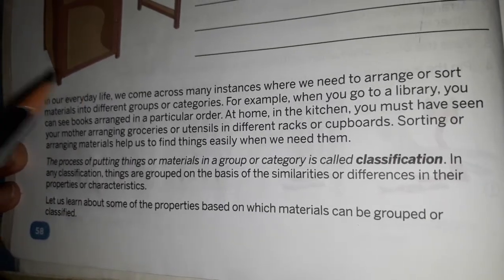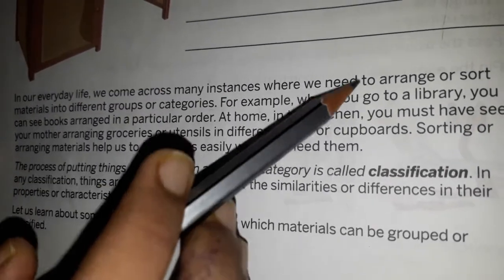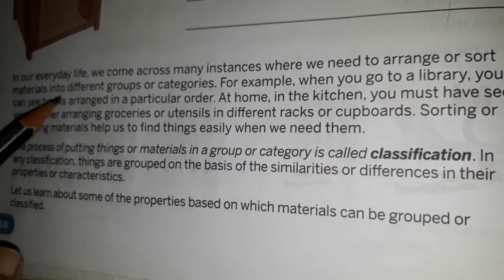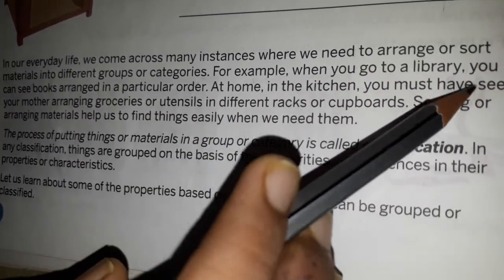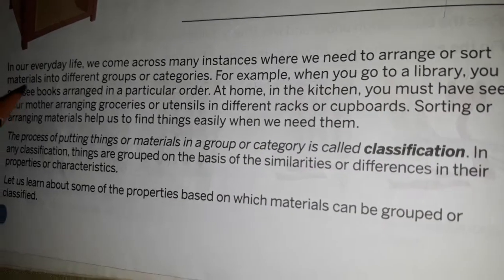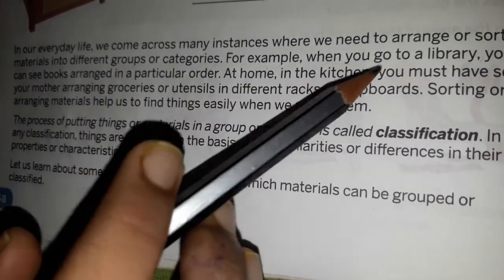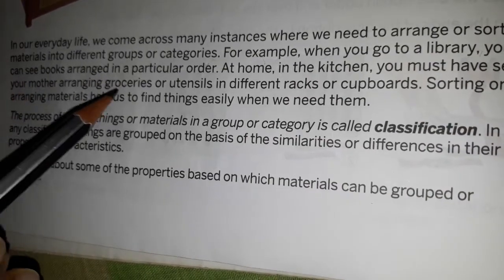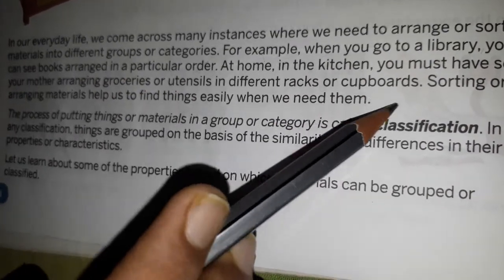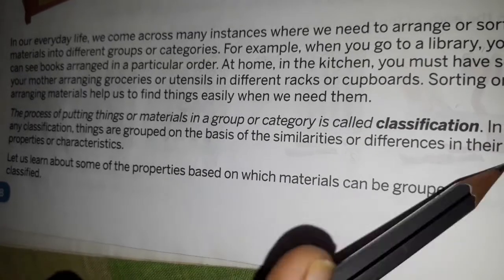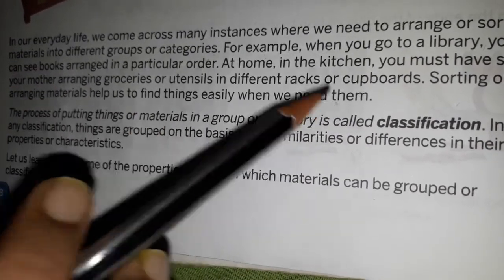In our everyday life, we come across many instances where we need to arrange or sort materials into different groups or categories. For example, when you go to a library, you can see books arranged in a particular order. At home, in the kitchen, you must have seen your mother arranging groceries or utensils in different racks or cupboards. Sorting or arranging materials helps us to find things easily when we need them.